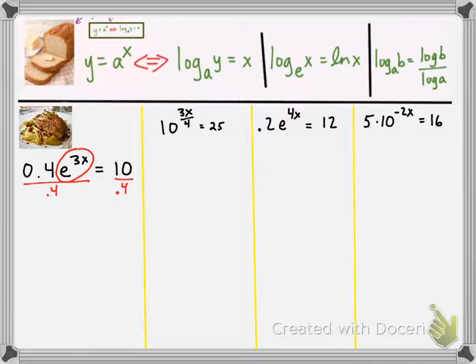So we have 10 divided by 0.4, and with a little bit of work, you can figure out that that is 25, so we have e to the 3x is equal to 25. And then, we have a problem just like our appetizer problems, where we convert this to log form, because we notice that our exponent contains our variable. So we want to write that as log base e of 25 is equal to 3x.